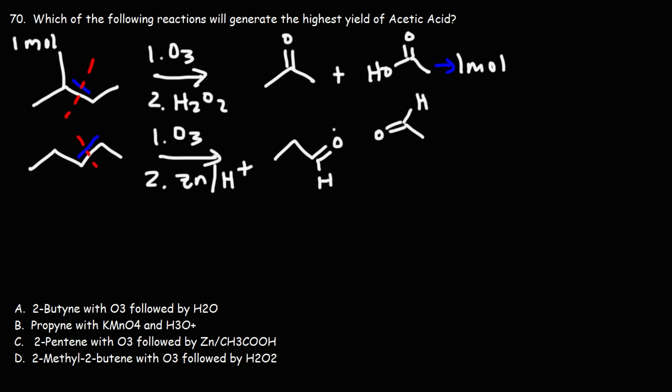So we're going to get one mole of propanal and one mole of ethanal. This reaction does not give us ethanoic acid, therefore we could eliminate answer choice C.